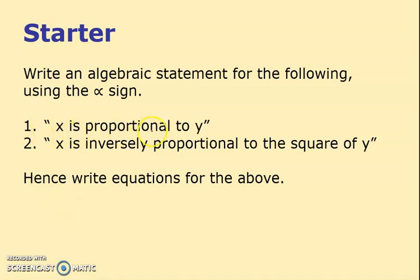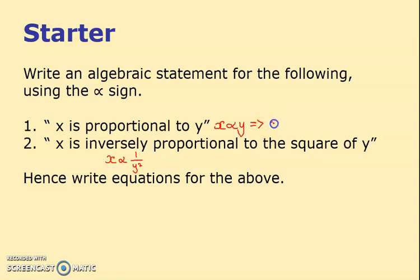It says x is proportional to y — write an algebraic statement. You might remember this from Year 12. When something is inversely proportional, we always write one over something. So x is inversely proportional to the square of y means x is proportional to one over y squared. To write the equation, introduce a constant k: x equals ky, or x equals k over y squared.